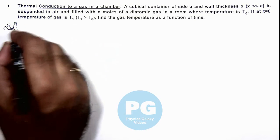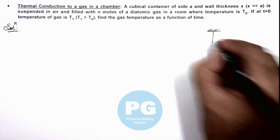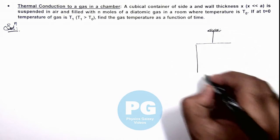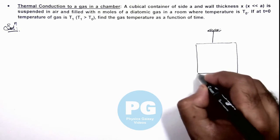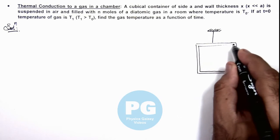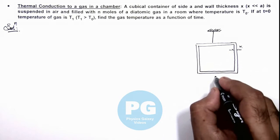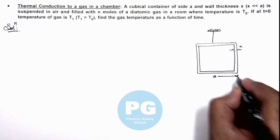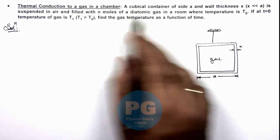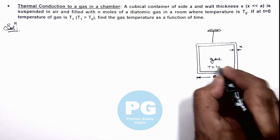Now in this situation here, if we draw the picture, we are given that a cubical container is suspended in a room like this, which the wall thickness given here is x, and the edge length is given as a. And gas is filled in it. We are given that a diatomic gas is being used, so we can consider its gamma is equal to 1.4.